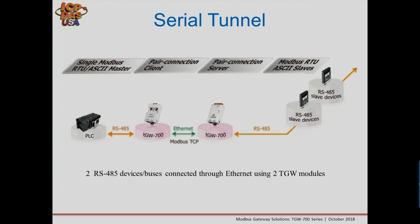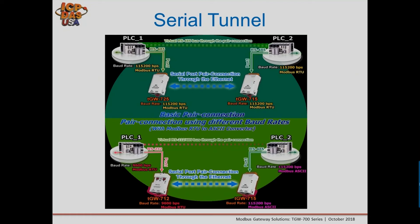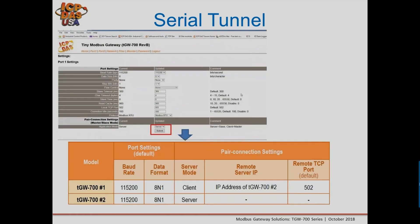For the serial tunnel setup, TGW module one is configured as the server with its baud rate set — just like a standard Modbus TCP to RTU application. TGW module two is configured in client mode, pointing to the IP address of TGW module one on port 502. Whatever comes in on one side of the bus comes out the other side — communication is paired one-to-one.